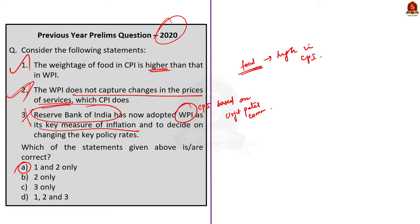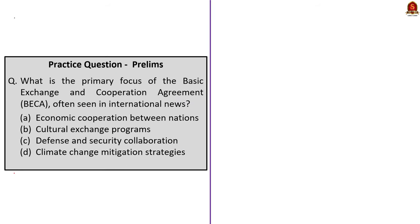Let us see the second question. What is the primary focus of the Basic Exchange and Cooperation Agreement (BECA), which is often seen in international news? From our discussion, we know that BECA stands for defense and security collaboration between India and the United States, and it is one of the foundational agreements between India and US. So the correct option is option C.